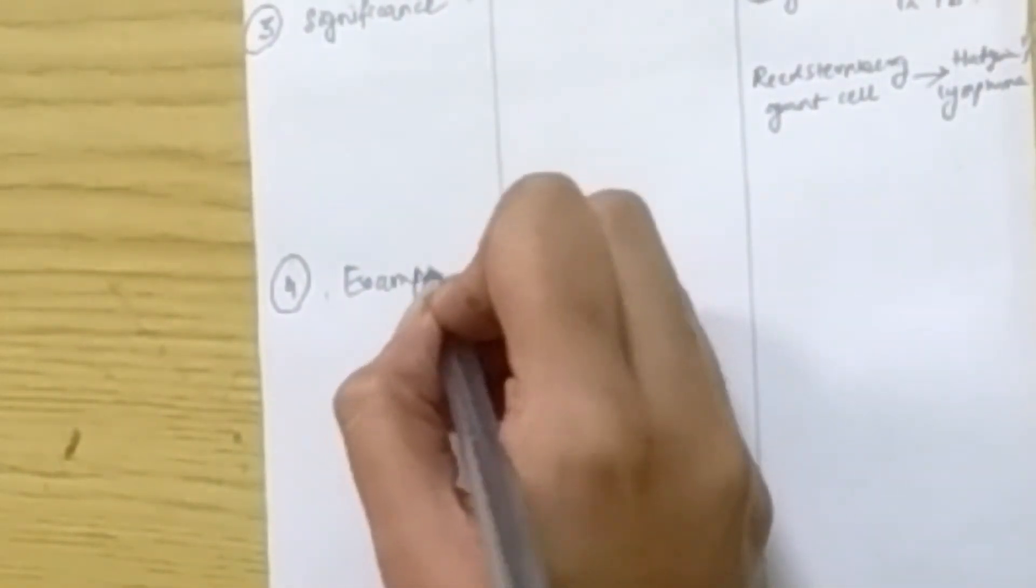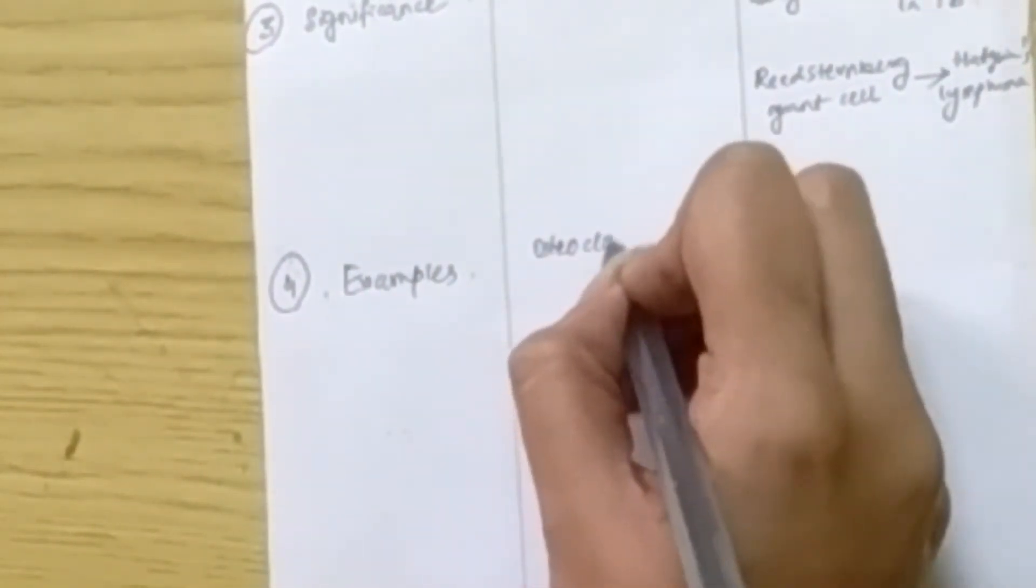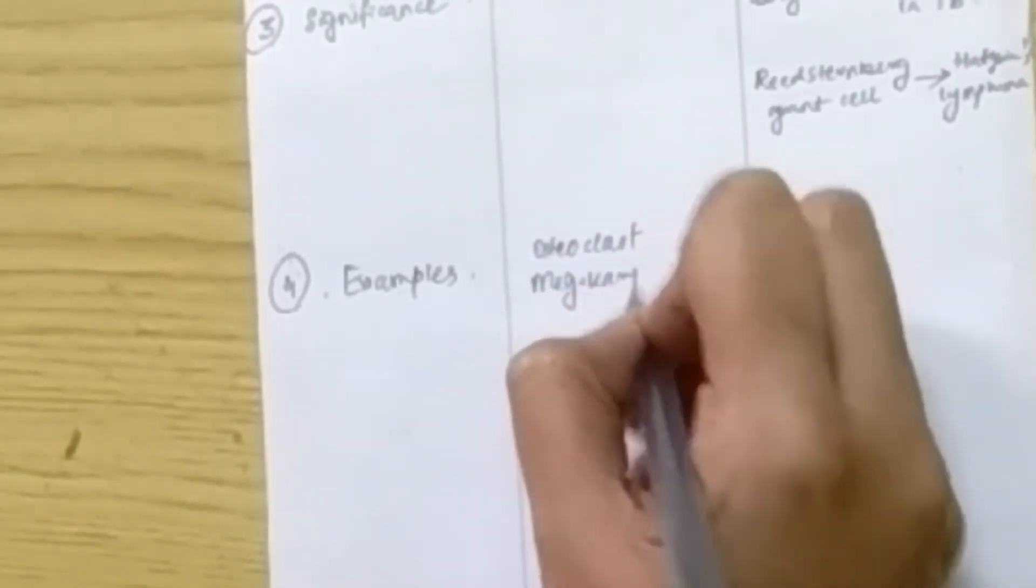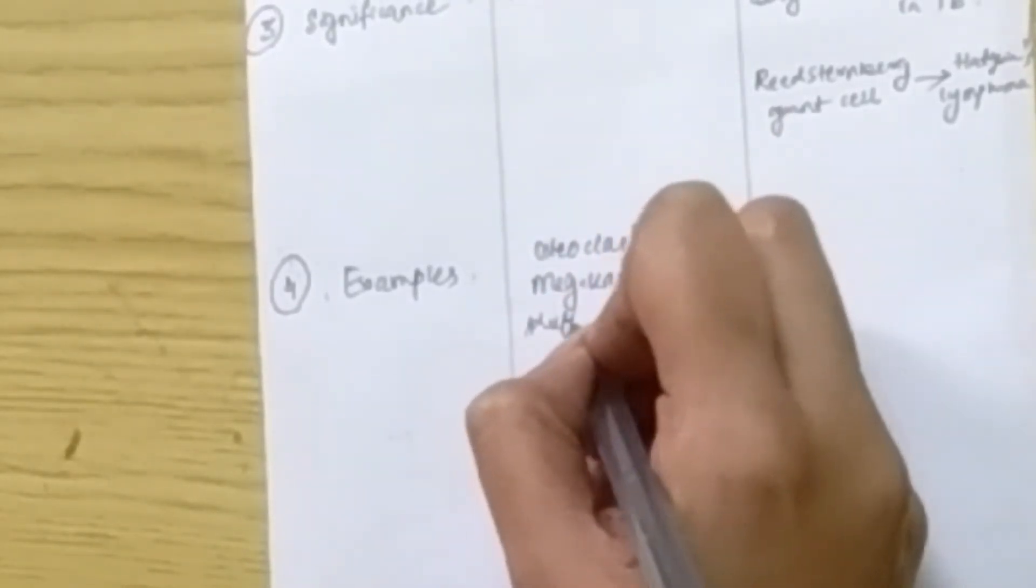Okay, now the fourth point of difference between physiological and pathological giant cells are the examples. Osteoclasts, megakaryocytes, and Kupffer cells - these are physiologic giant cells. And Touton giant cell, tumor giant cell, and already discussed Reed-Sternberg and Langhans giant cells are the pathological giant cells.